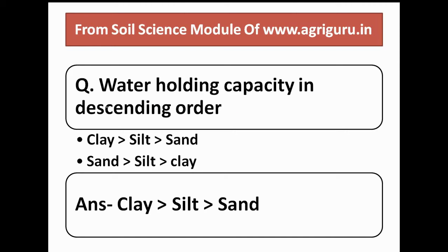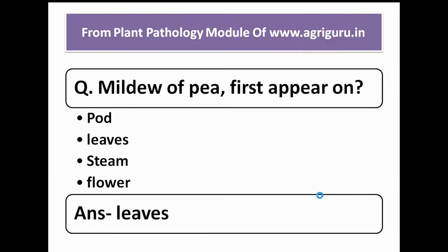The 14th question is from the soil science module of agriguru.in. The question is about water holding capacity in decreasing order. We have to arrange the water holding capacity of soil in decreasing order, and the correct answer is clay, then silt, then sand.